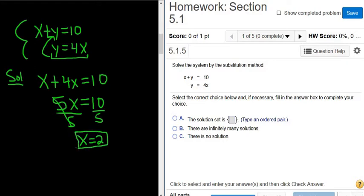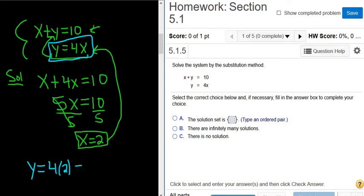To find the y-coordinate, we just have to take the x and plug it into any equation we want. It looks like the easier choice is the second equation. So we have y equals 4x, but x is 2, so it's 4 times 2. And 4 times 2 is 8. So y equals 8.